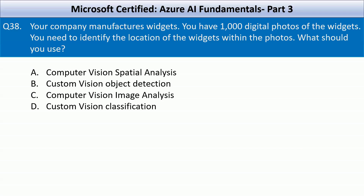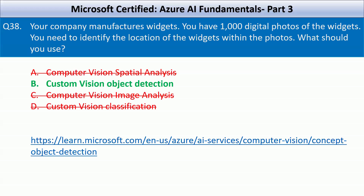Question number 38: Your company manufactures widgets. You have a thousand digital photos of the widgets. You need to identify the location of the widgets within the photos. What should you use? Your options are computer vision spatial analysis, computer vision object detection, computer vision image analysis, and custom vision classification. Computer vision spatial analysis is used for analyzing human movement and spatial relationships, so it's an incorrect choice. Custom vision object detection is used to identify and locate objects within images by drawing bounding boxes around them, making it the right fit. Computer vision image analysis provides general insights like tags and descriptions, and custom vision classification classifies images into categories.